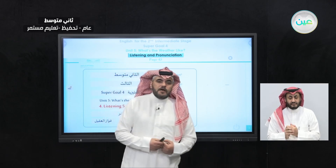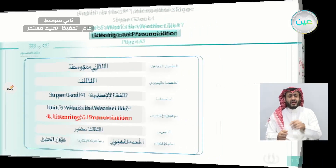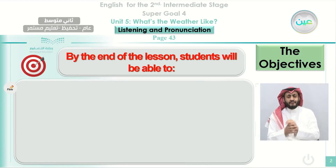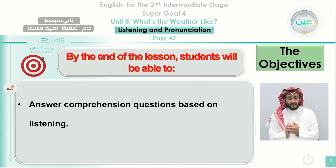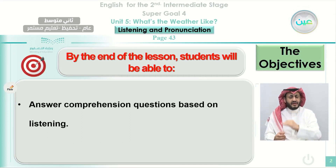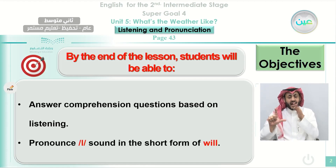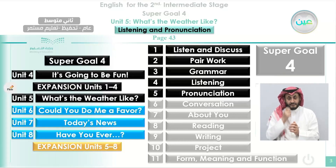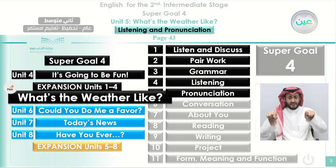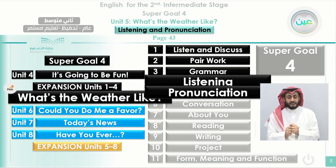As always, we start our class by reviewing the objectives — what we are planning to achieve at the end of this class, inshallah. The students will be able, by the end of the class, to answer comprehension questions based on listening. Also, they will be able to pronounce the 'll' sound in the short form of 'will.' We are still in unit 5 and the title of this unit is 'What is the weather like?' Our class today is going to be on sections 4 and 5: listening and pronunciation.